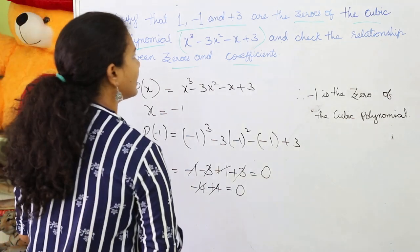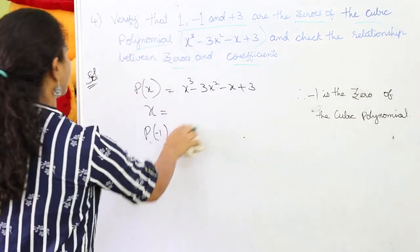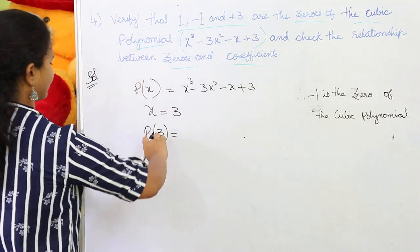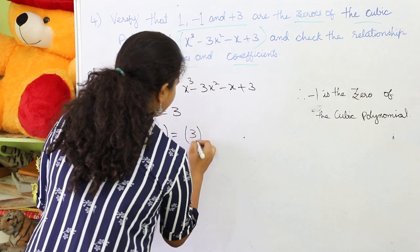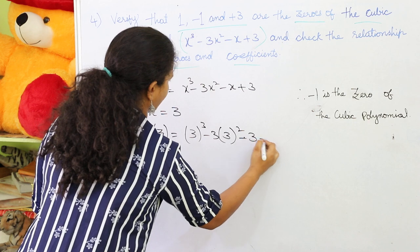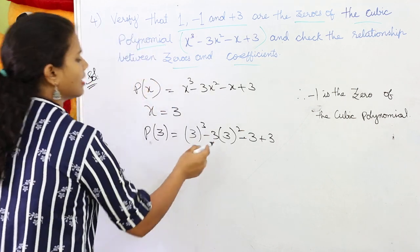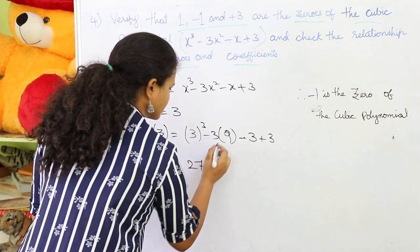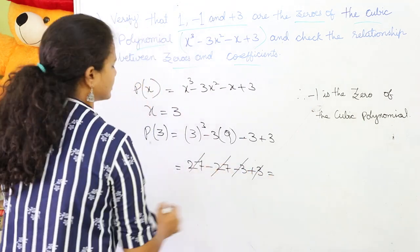Let us check whether +3 is a zero of the polynomial or not. If x = 3, then p(3) = 3³ - 3(3²) - 3 + 3. Now 3³ = 27, and 3² = 9, so 3 × 9 = 27, giving -27. Then -3 + 3. We see +3 - 3 cancel, and -27 + 27 cancel, therefore we get 0.